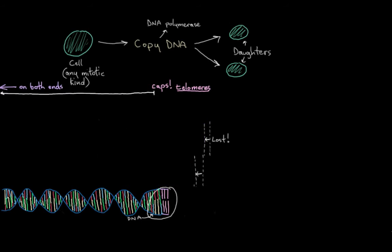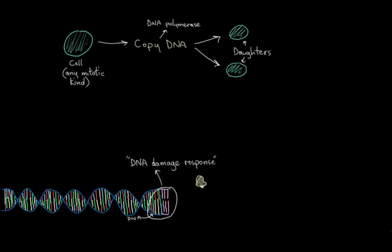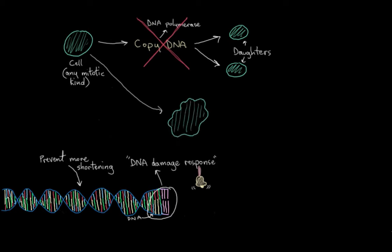But not to worry, we have a contingency plan built in. So once the telomeres get too short, the cell initiates a DNA damage response. It sort of rings these internal alarm bells. And it gives up its ability to divide because it really wants to prevent any more shortening of this chromosome that would happen in further rounds of replication. So it loses its ability to divide. And by doing that, it has become what's called a senescent cell.